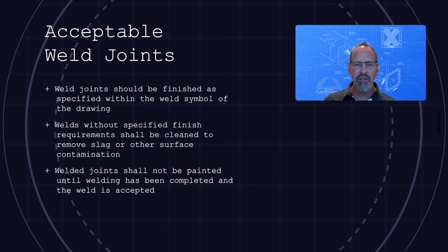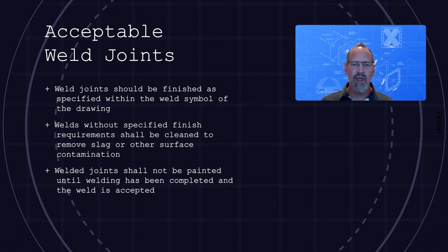If there are any weld joints suspect or not meeting the standard, those parts should be reworked or remade as appropriate prior to shipping to the customer. If there are any concerns, the Xometry case manager or quality department team can be contacted by selecting report an issue in the portal for the job in question.